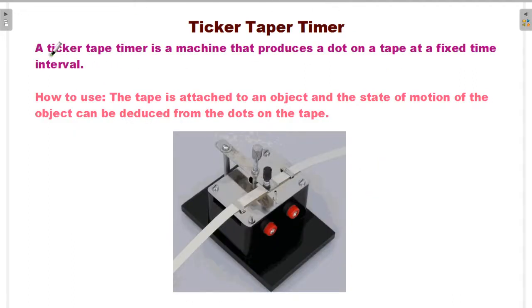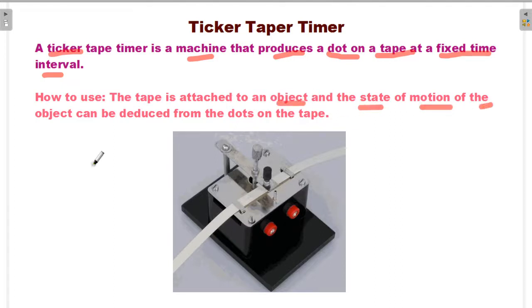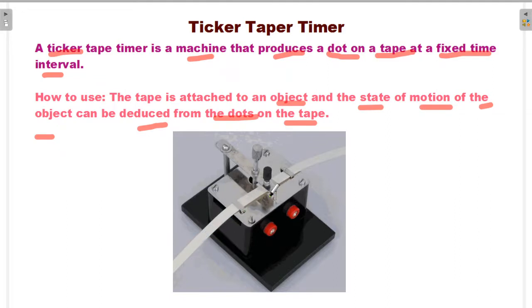A ticker tape timer is a machine that produces a dot on tape at fixed time intervals. To use it, the tape is attached to an object, and the state of motion of the object can be deduced from the dots on the tape. In the picture of a ticker tape timer, you can read the dots on the tape to find out information about the object's movement.